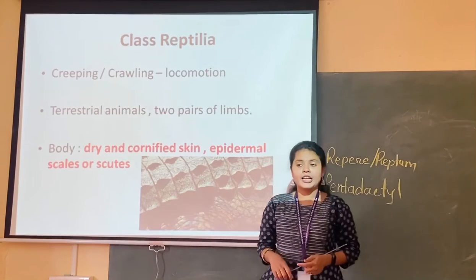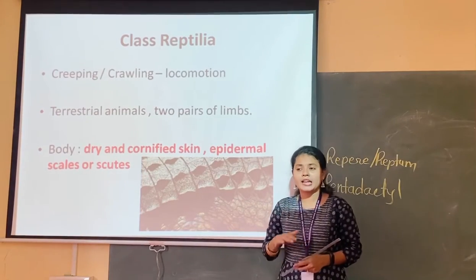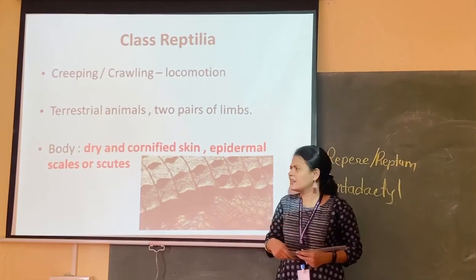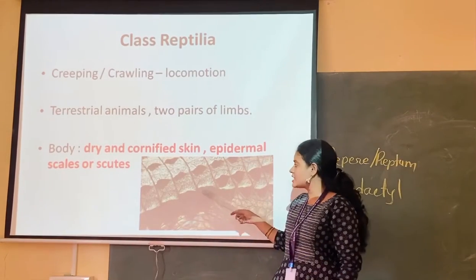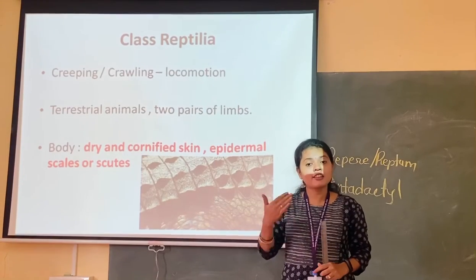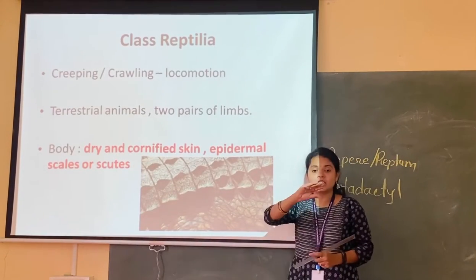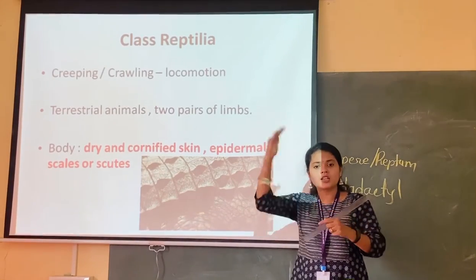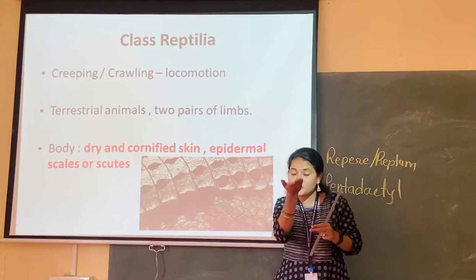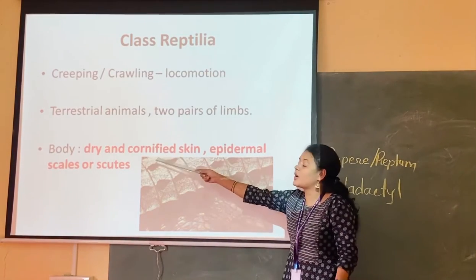Now going to their body — specifically their skin. The reptile skin is very dry and it is very cornified, meaning the skin has very dense cells. Because these animals are found on land where there is extreme heat, they have this dry and cornified skin to prevent water loss from their body. In case of amphibians, the skin is moist because they have glands beneath it. Here in reptiles, there are no glands within the skin, so it is very dry.